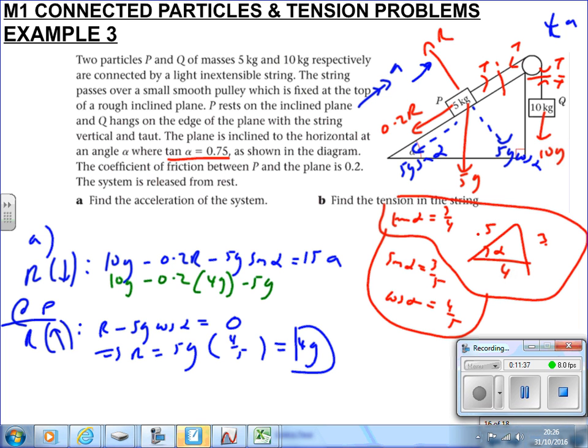If we go back to where we were, this is 10g minus 0.2R, which we now know is 4g, minus 5g sin alpha, which we know is 3 by 5, equals 15a. Therefore, a equals all that stuff divided by 15. So 10 times 9.8 minus 0.2 times 4 times 9.8 minus 5 times 9.8 times 3 by 5 divided by 15 is 4.05 to 3 sf.